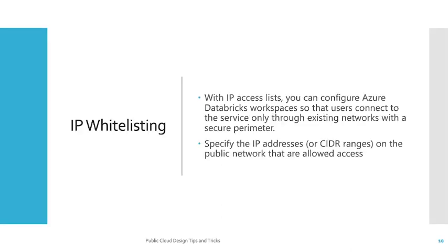The last feature is IP whitelisting. With the IP access list, you can configure your Azure Databricks workspace so that users connect to those services only through existing networks with a secure perimeter. You can specify IP addresses or CIDR ranges on the public network that are allowed access. You can also set deny rules in the IP whitelisting area so that certain sources cannot reach your Azure Databricks.